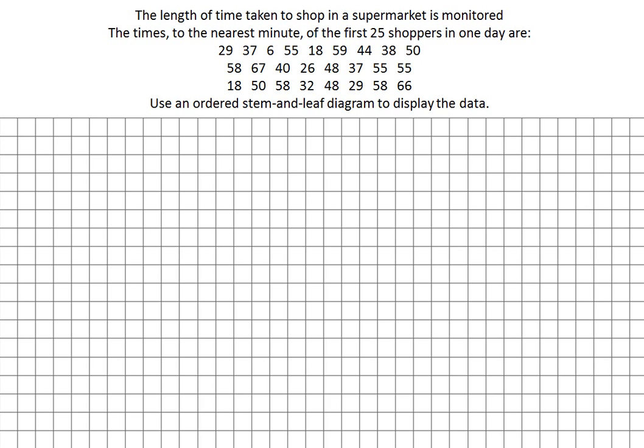We're going to use a stem and leaf diagram to display this data. So we're given the times to the nearest minute of the first 25 shoppers in the supermarket.